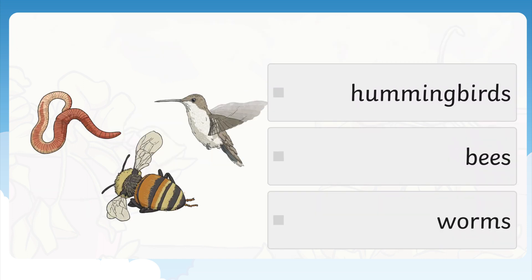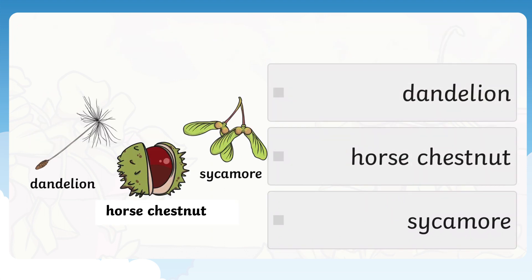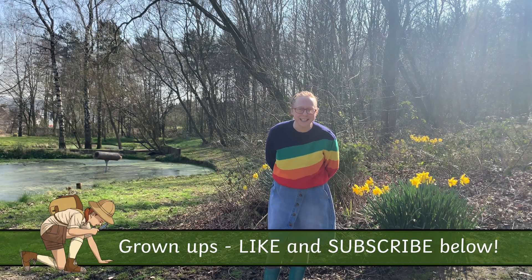Which of these creatures does not help with pollination — hummingbirds, bees, or worms? It's worms! Which seed is dispersed by animals — dandelion, horse chestnut, or sycamore? It's the horse chestnut. And here's the last question: at which stage does pollination occur — germination, roots, leaves, flowering, or seed dispersal? It's number four — flowering. Thanks so much for watching and we'll see you next week!